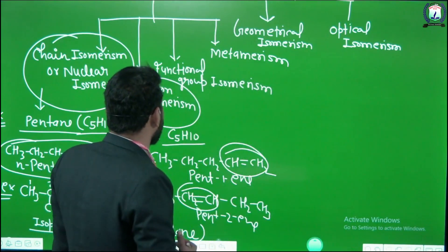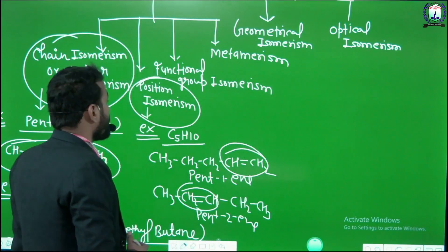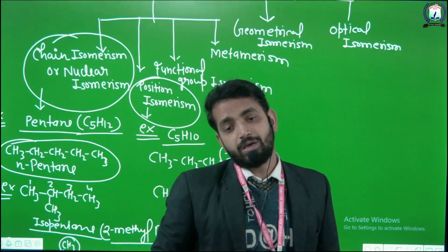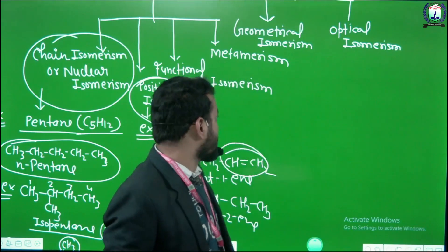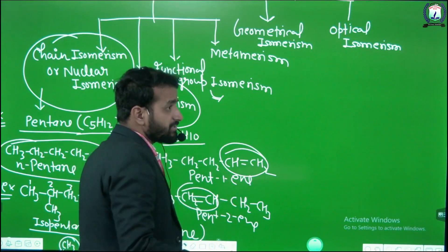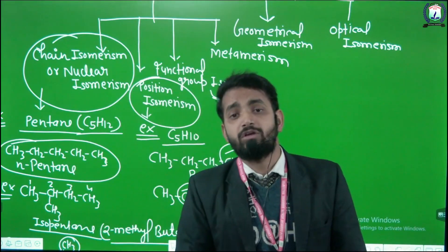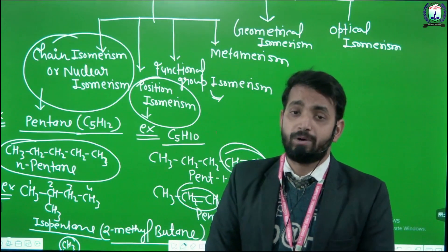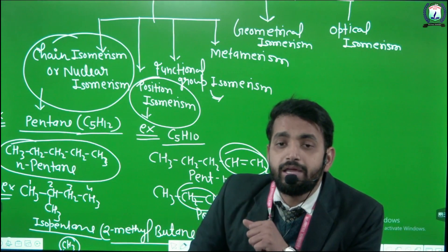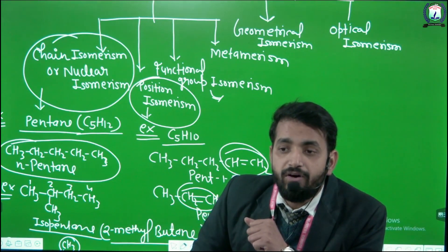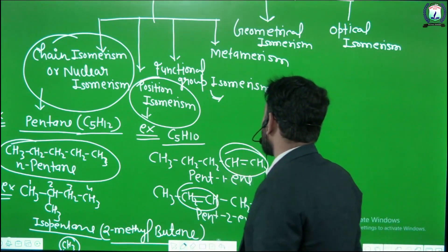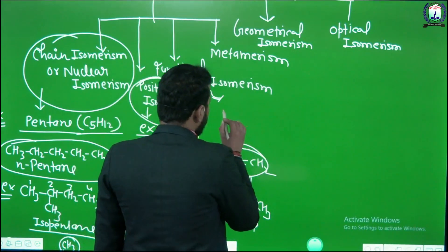The next type is functional group isomerism. In this type, compounds have the same molecular formula but the functional groups are different. For example, the functional group in one compound is different from that in another.